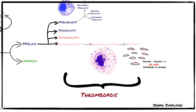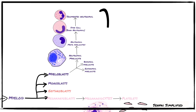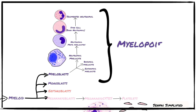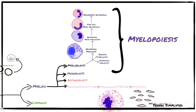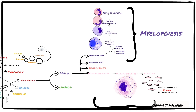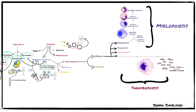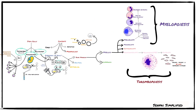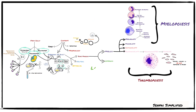Platelets have a lifespan of about 10 days, after which they are destroyed in the spleen. The process of formation of platelets is known as thrombopoiesis. The process of formation of granulocytes and monocytes is known as myelopoiesis, and the process of forming lymphocytes is known as lymphopoiesis. The formation of red blood cells will be discussed in another video.